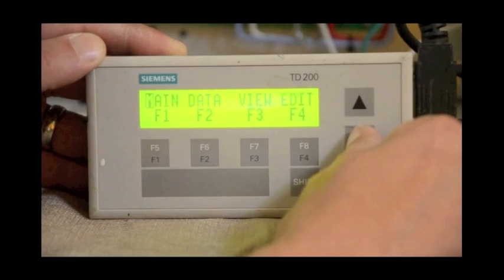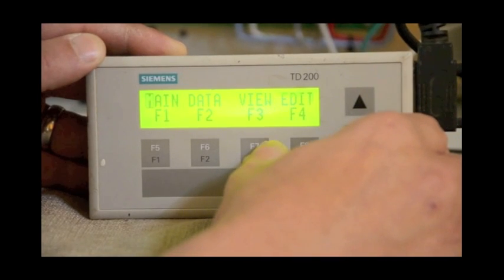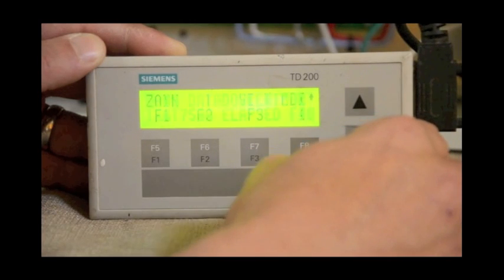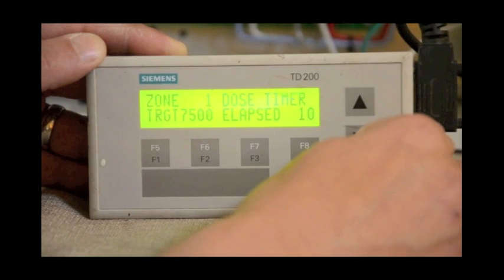The F3 screen allows you to view the current status of the system. You can use this screen to watch timers and counters increment as the system is running. When you press the F3 key, the first screen that you'll see is the zone dose timer. We have the target pump run time and the elapsed amount of time, so when the system is running, we'll be able to watch the elapsed time increase.